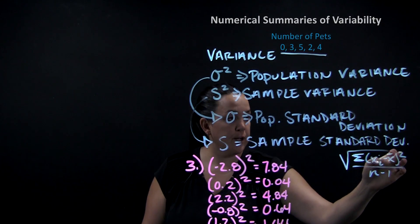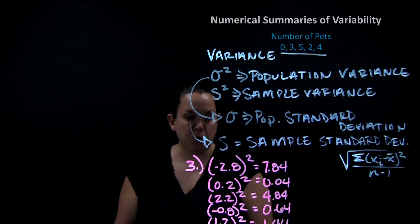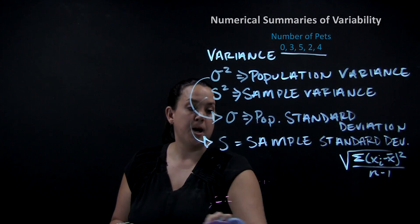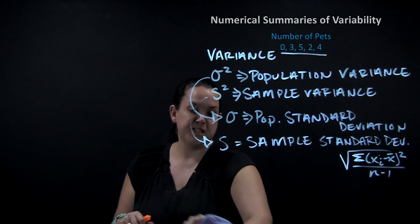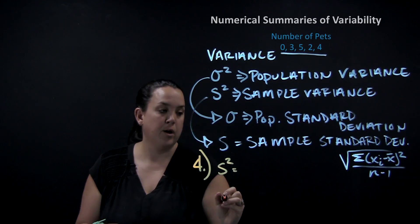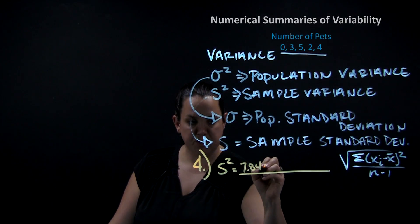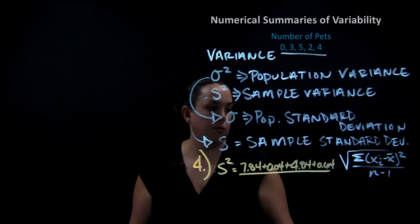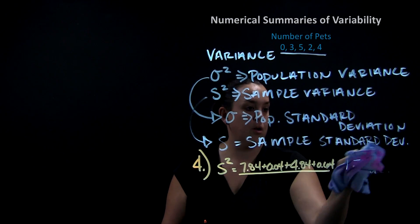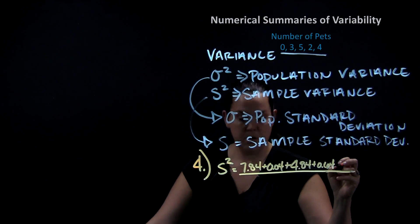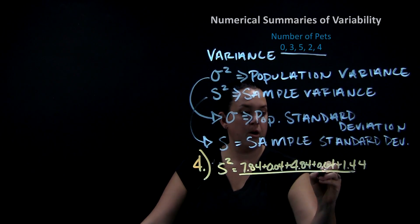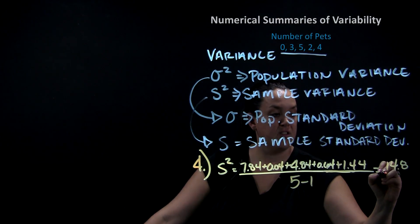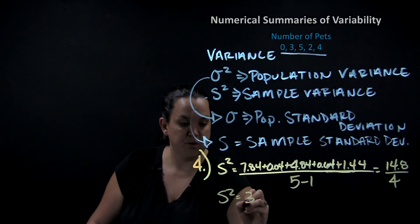Now we add up all the squared distances and divide by n minus 1. This step actually gives us the calculation for variance. The sum of all squared distances is 14.8, divided by 4 (that's n minus 1), so s squared — sample variance — comes out to be 3.7.